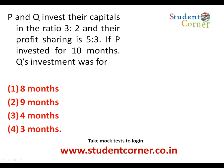The next question: P and Q invest their capitals in the ratio three is to two, and their profit sharing is five is to three. P has invested for ten months, so P's contribution is three into ten. Q invested for K months, so Q's contribution is two into K. Using cross-multiplication — three into ten into three equals two into K into five — giving ninety equals ten K, so K equals nine. Q invested for nine months.